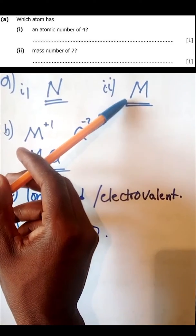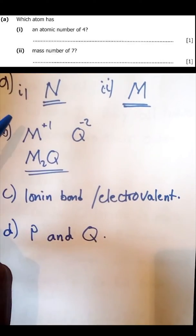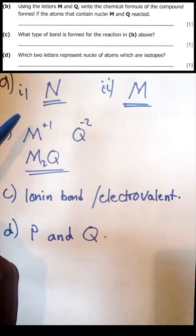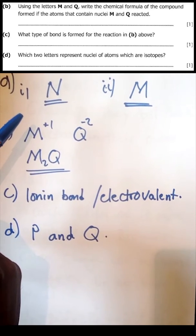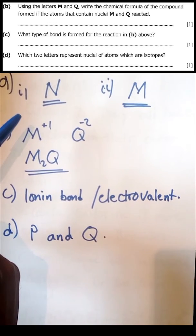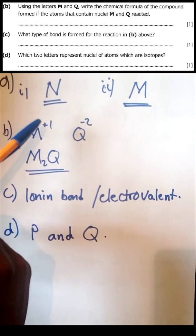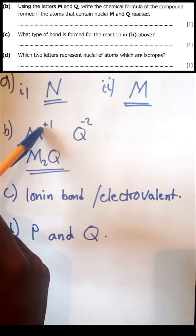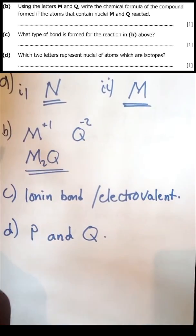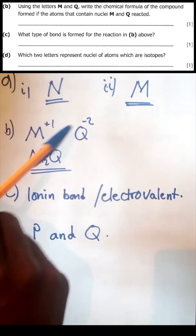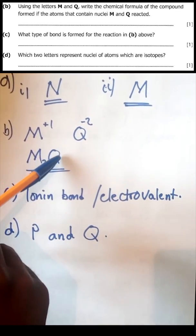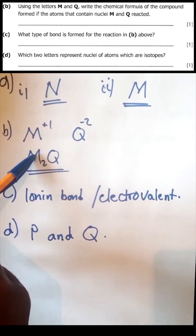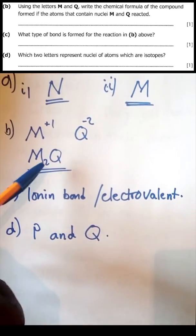Question 3b: using the letters M and Q, write the chemical formula for the compound formed if the atoms that contain nuclei M and Q reacted. The atom with the nuclei M has a valence of one and the nuclei of atom Q has a valence of two. So reacting this you are going to get M2Q1, because two comes down there and one will come down there, so you have M2Q.